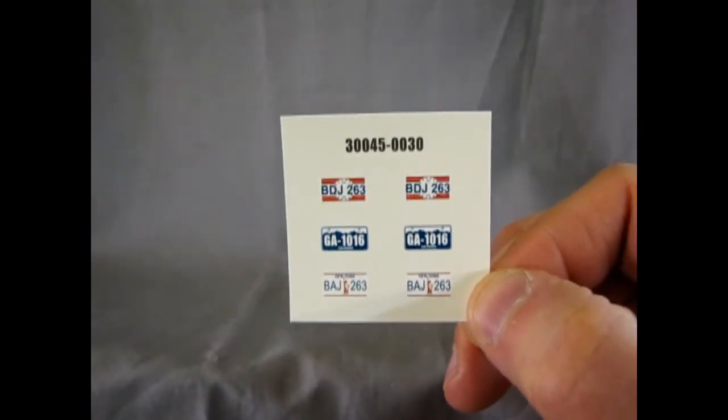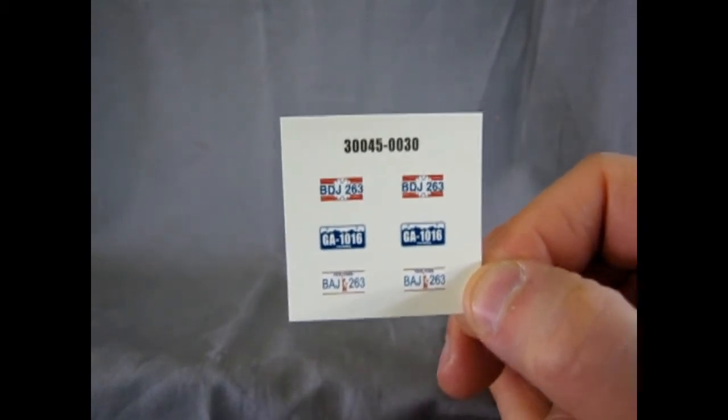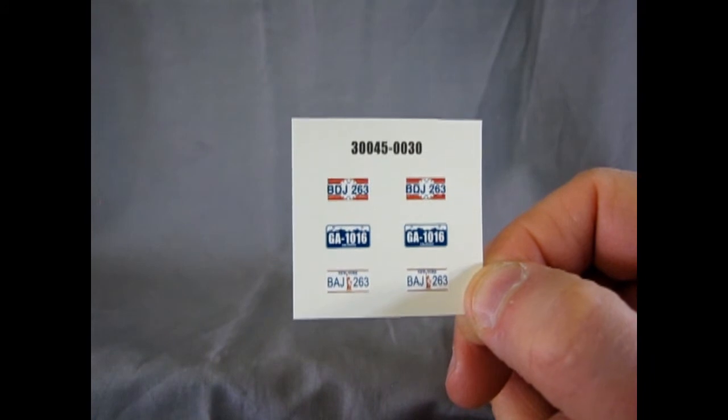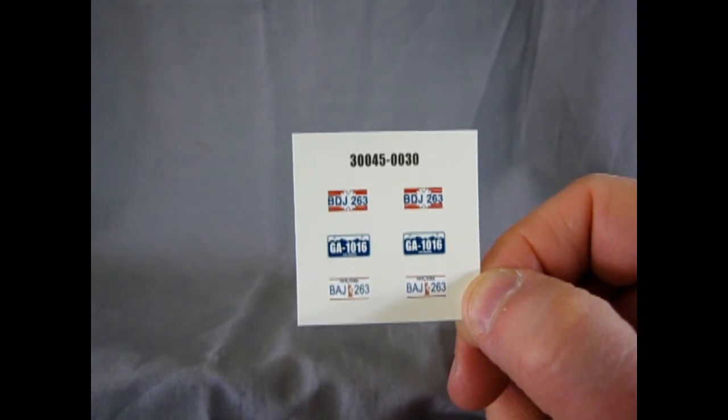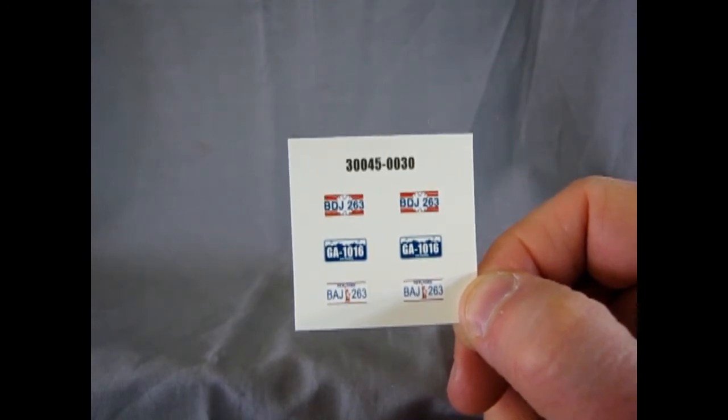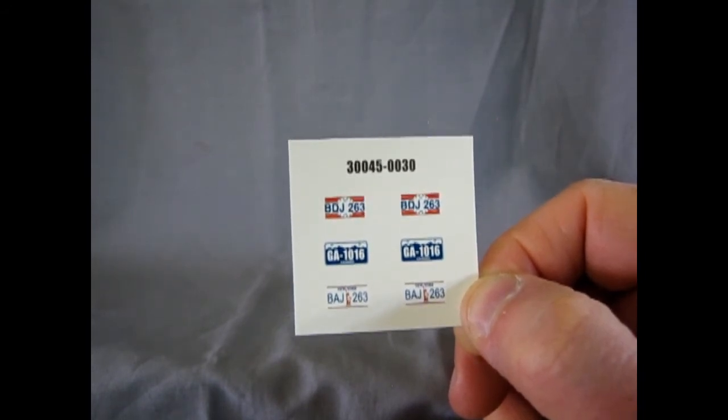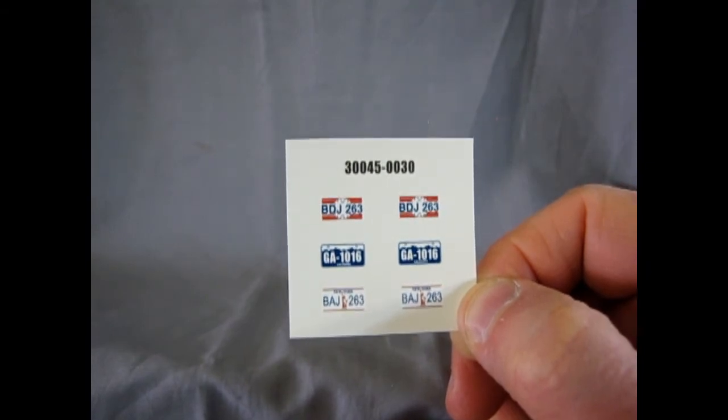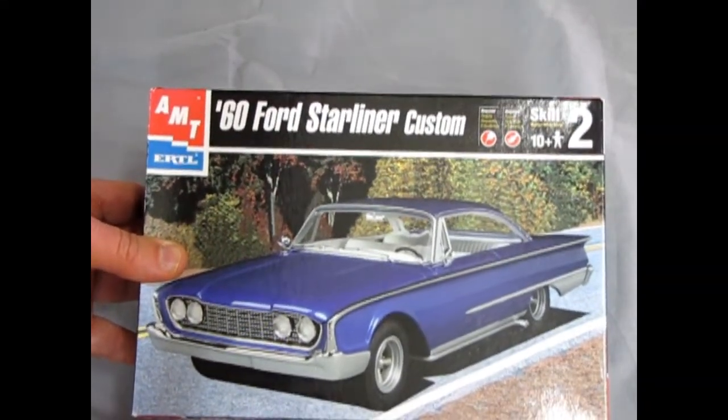And finally we get these three sets of license plates. The top ones are 1944 plates. You could always build a car that's like sixteen years older and put these on it I guess. Then there are some Colorado plates, GA-1016, and New York ones, BAJ 263. So this is what you get in the kit. That will conclude our review of the AMT 1960 Ford Starliner Custom.